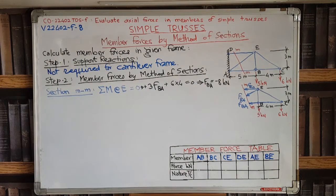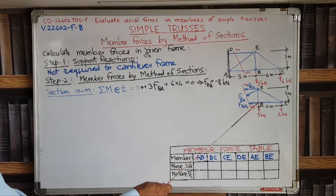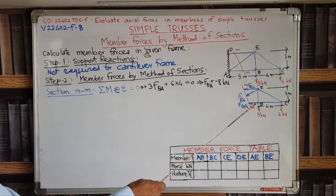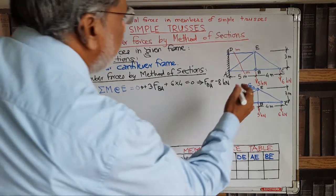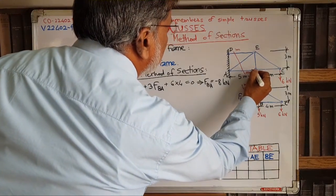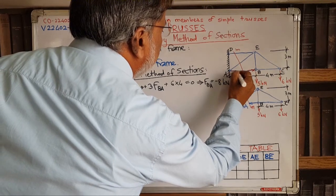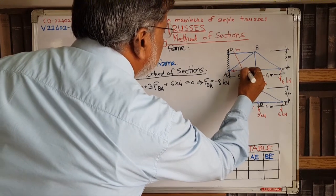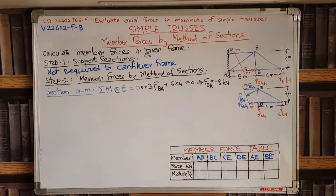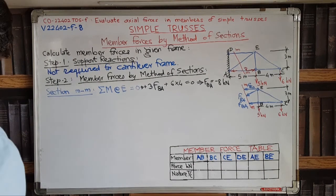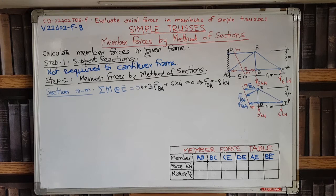Solving the moment equation gives F_BA = −8 kN. The negative sign means the assumed direction — away from joint B — is incorrect; the force actually acts towards joint B. So we reverse the arrow direction on the free body diagram, and the magnitude is 8 kN.